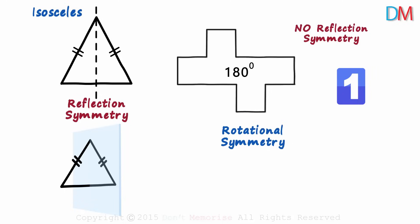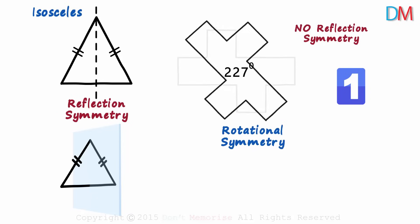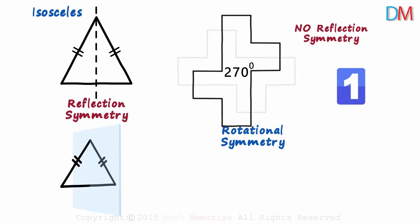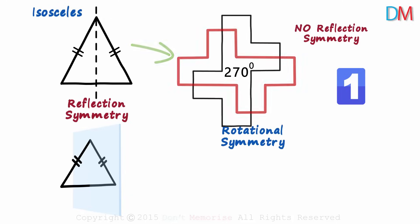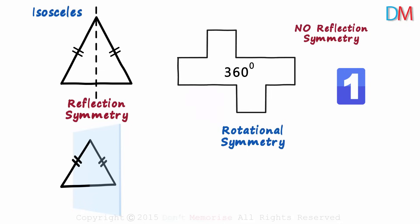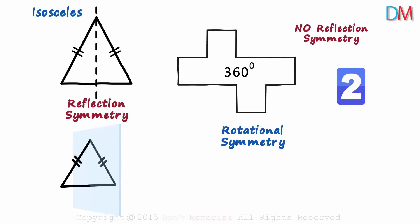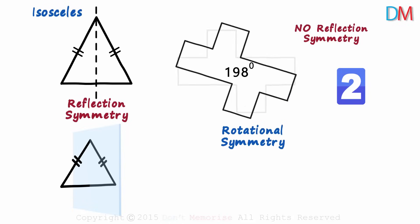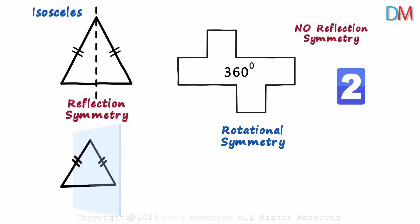We see an increment of one on the counter. We continue rotating until we finish one complete rotation. Rotating it by 270 degrees gives us a shape which is not the same as the original. And rotating it by 360 degrees gives us the original shape back — the counter changes to 2. This tells us that when this figure is rotated completely by 360 degrees, the rotated image looks exactly like the original image twice: once at 180 degrees and again at 360 degrees. So we say that this shape has rotational symmetry of order 2.